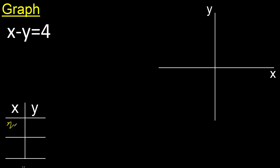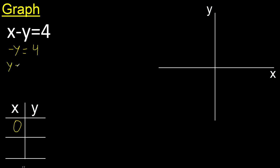Here any number or here any number. For example, x is 0. 0 minus y is minus y, equal fold. Therefore, y is minus fold.